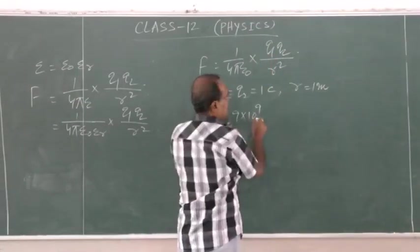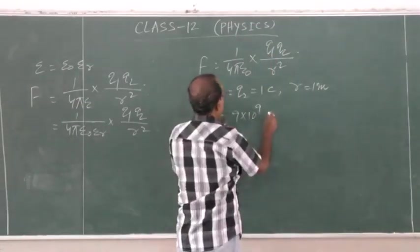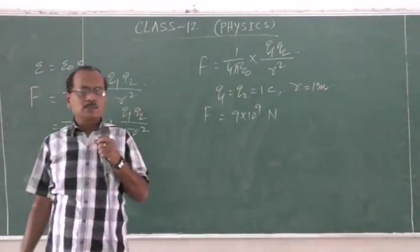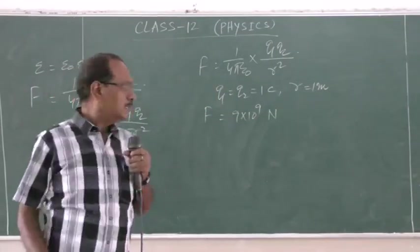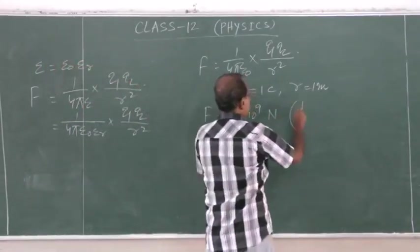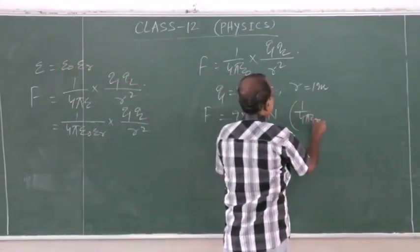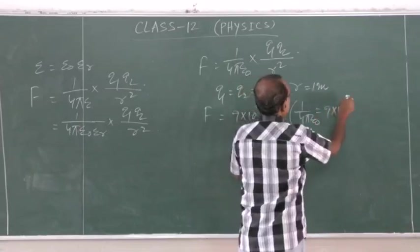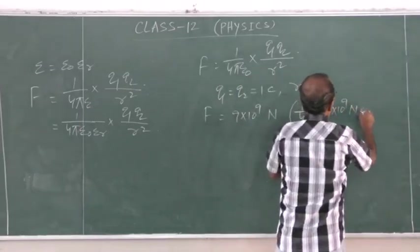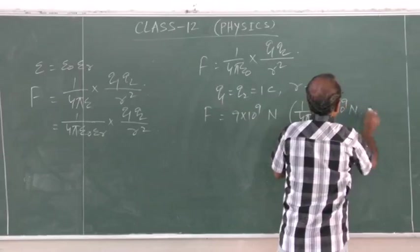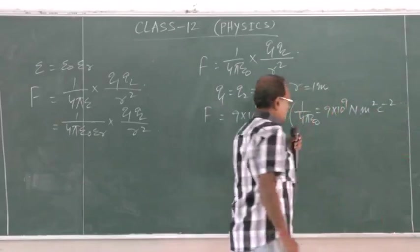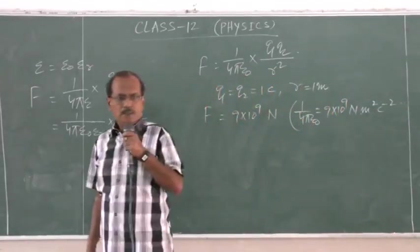The numerator terms become 1, so F = 9 × 10⁹ Newton. This is because we already know that 1 / 4π ε₀ = 9 × 10⁹ N·m²/C².